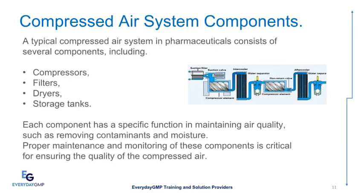Compressed air system components: A typical compressed air system in pharmaceuticals consists of several components, including compressors, filters, dryers, and storage tanks. Each component has a specific function in maintaining air quality, such as removing contaminants and moisture. Proper maintenance and monitoring of these components is critical for ensuring the quality of the compressed air.